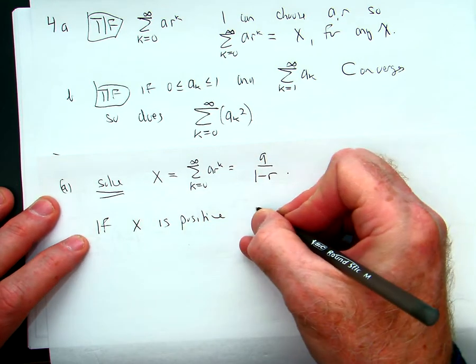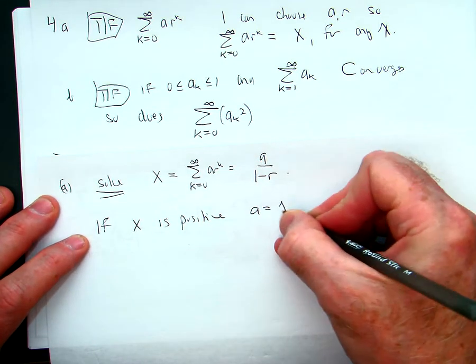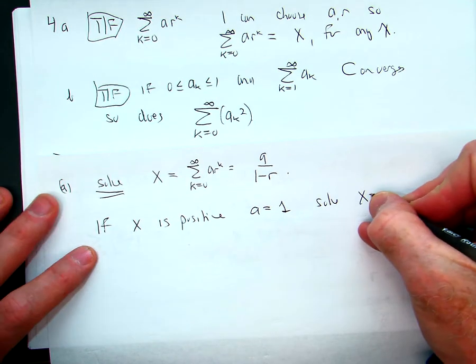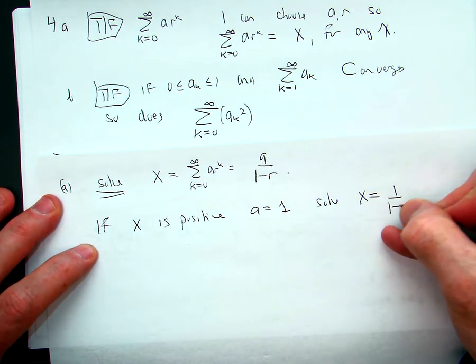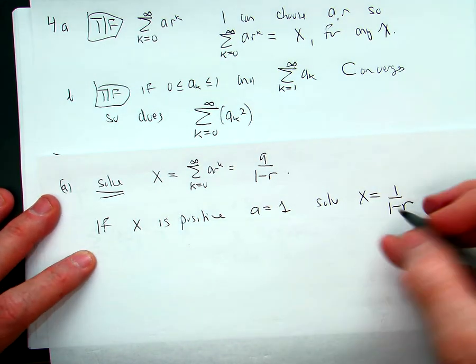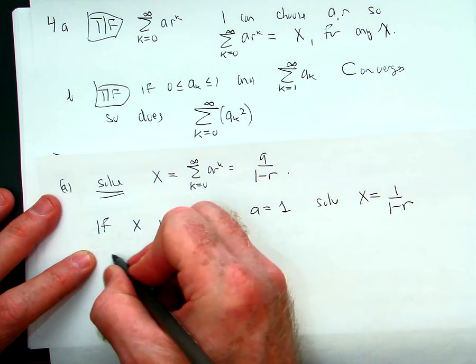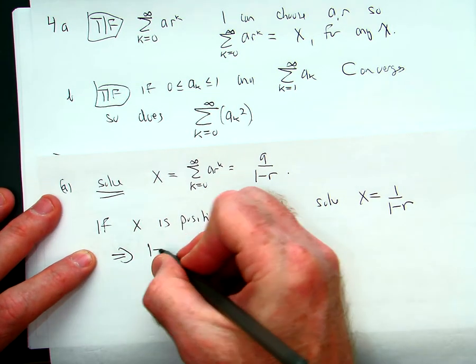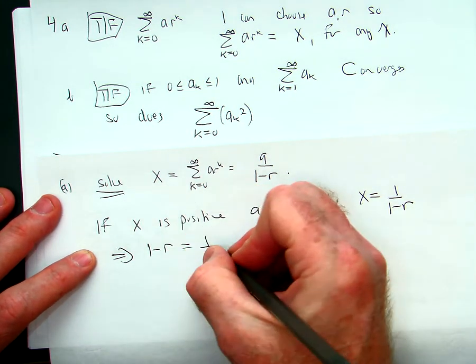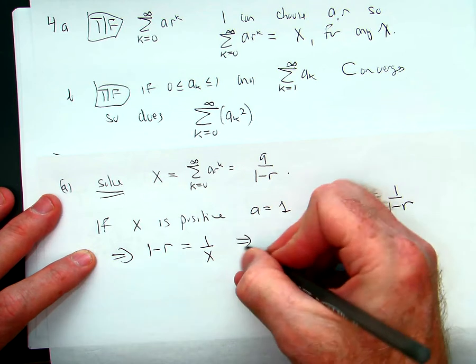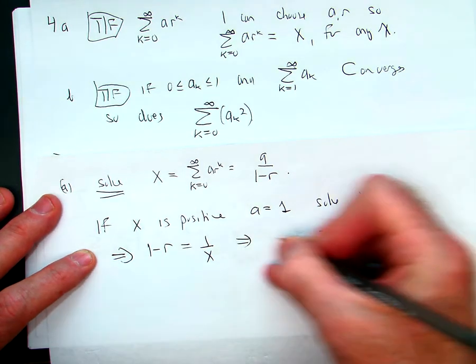I'm going to solve x equals one over one minus r. And what I get here, invert and multiply, this tells me that one minus r is equal to one over x. So I move r over to this side, x over to this side.